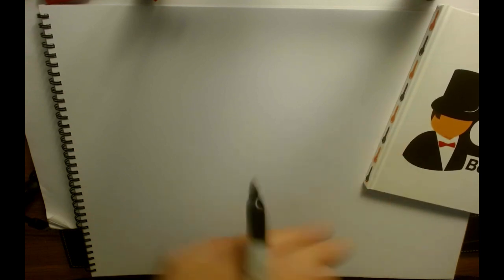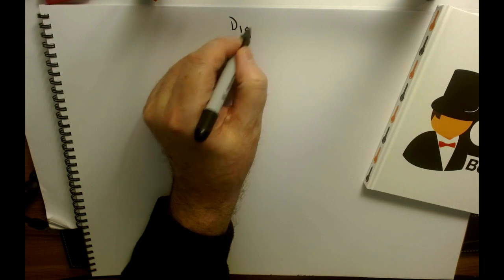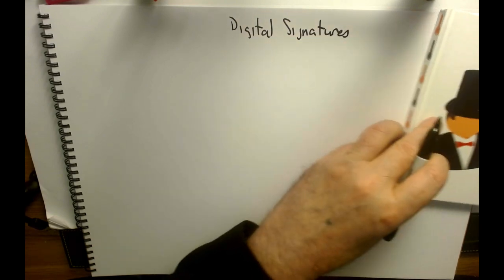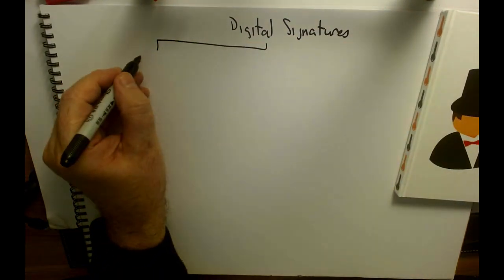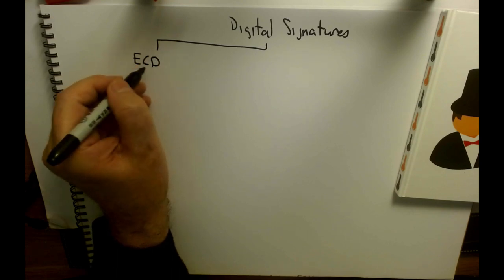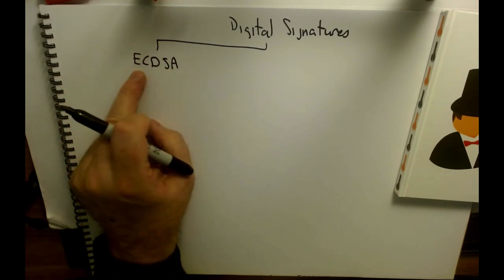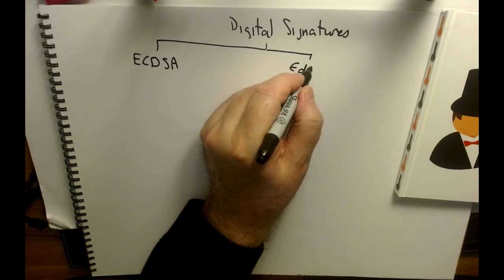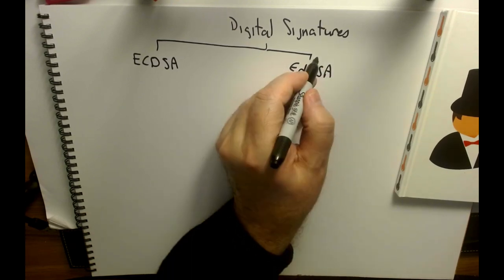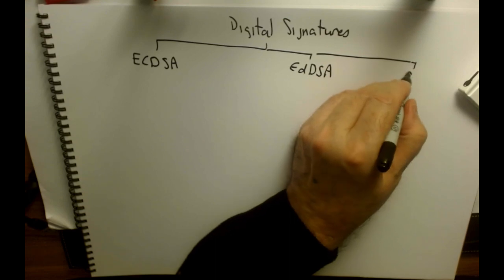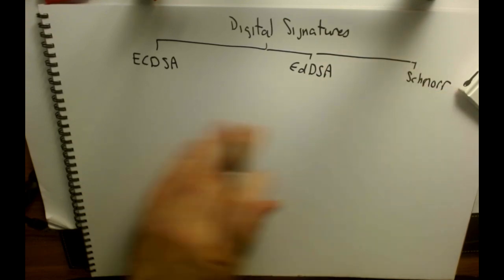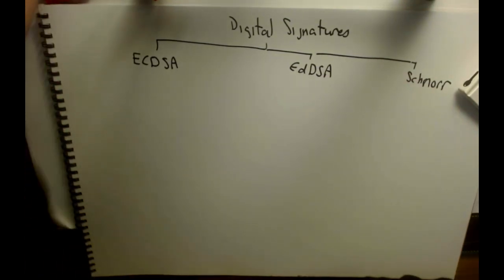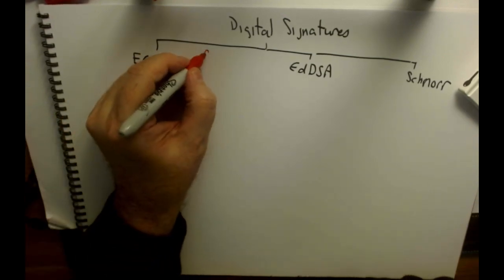Let's look at digital signatures and three main types. The first is ECDSA — Elliptic Curve Digital Signature Algorithm. The next one is EdDSA, and the last one we'll look at is the Schnorr signature method. Those are the three methods we'll examine.